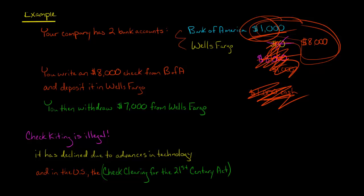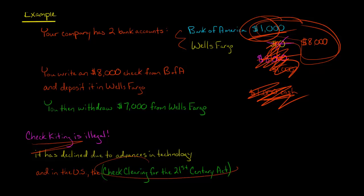The simple example uses two accounts, but some people set up 20 or 25 different bank accounts, creating really sophisticated schemes. Check kiting has been reduced significantly due to advances in technology — specifically the shortening of check clearing times through electronic processing. In the United States, the Check Clearing for the 21st Century Act of 2004 also sped up electronic processing and changed the system. It's not as prevalent today, but it's still something an auditor should be aware of.